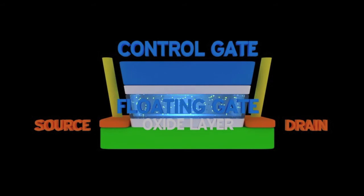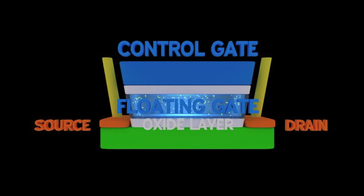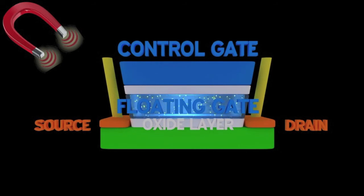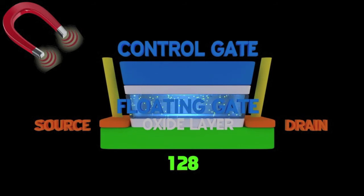This blocks the current between the source and the control gate so the electrons remain trapped there. However, to erase bits from the floating gates, a magnetic field can simply be applied over an area of the floating gates. Since these fields cannot be controlled exactly, about 128 kilobytes of data must be erased at once.